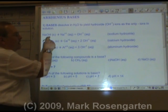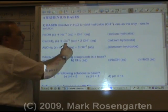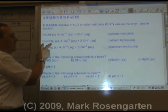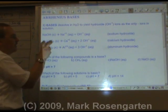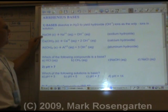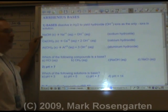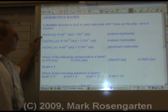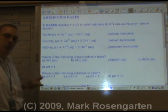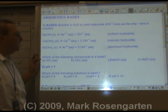Any metal hydroxide can dissolve in water to give off hydroxide ions — sodium hydroxide, calcium hydroxide, and aluminum hydroxide. Sodium hydroxide is found in drain cleaner. Calcium and aluminum hydroxide are found in antacid tablets; they help neutralize excess stomach acid.